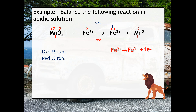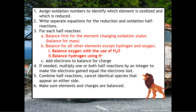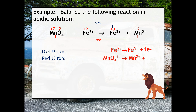For the reduction half reaction, this is where we incorporate those new steps. We bring down MnO4- and Mn2+. We want to balance first for the element changing oxidation states — manganese is already balanced. Then we balance for oxygen with water: we've got 4 oxygens on the left, so we need 4 waters on the right. By adding water, we've now incorporated hydrogen, so we need to add 8 H+ to the left-hand side, since 4 times 2 gives 8. Now we're balanced for mass for all elements.